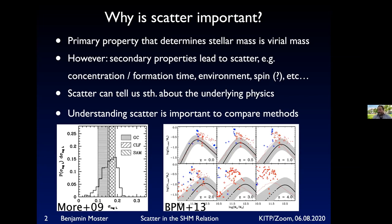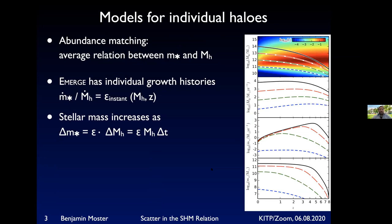I hope I've convinced you that scatter is an important thing to understand. From the empirical modeling side, we've usually had just an average relation between stellar and halo mass in abundance matching. But newer models — our model EMERGE, but also Universe Machine, STEEL, and others — now look at individual growth histories. What we parameterize is not a relation between stellar mass and halo mass but the ratio between star formation rate and halo growth rate.